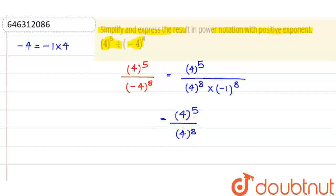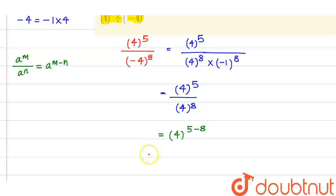Now apply that property which is if it is given like a to the power of m upon a to the power of n so that is a to the power of m minus n. So similarly we have 4 and this is 5 minus 8 so that is I can write this thing as 4 to the power of minus 3.